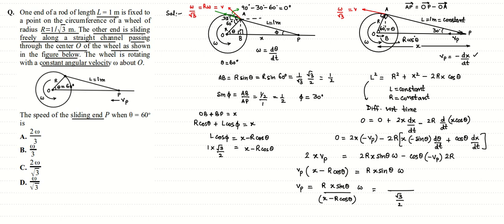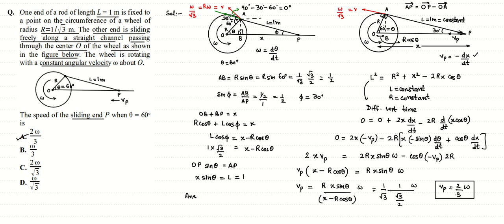Substituting all values: VP = (R·x·sinθ·ω)/(x − R·cosθ) = ((1/√3)·1·ω)/(√3/2) = (ω/√3)·(2/√3) = 2ω/3. The velocity of particle P comes out to be 2ω/3, which corresponds to option A.